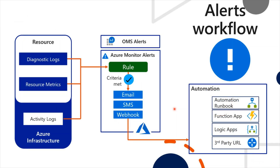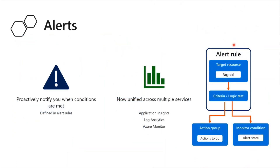The key attributes of an alert rule are: target resource, signal, criteria, alert name, alert description, severity, and actions. You define a target resource and a signal, then set criteria with logic to test. If the criteria is met, the action group is triggered. This is the same flow shown in the alert rule diagram: target resource → signal → condition → action → monitor condition.